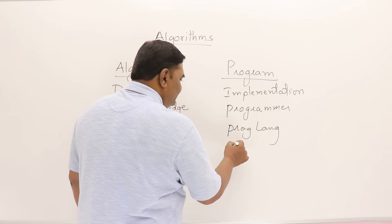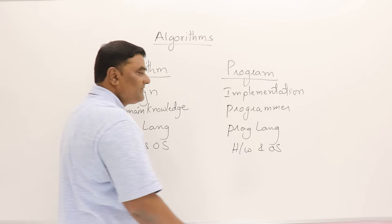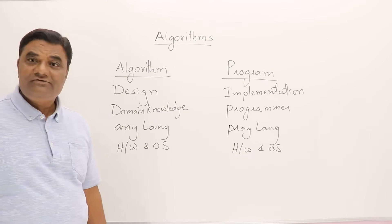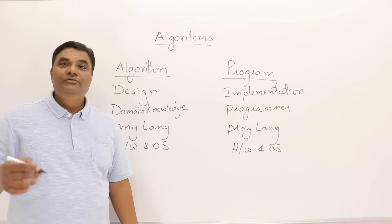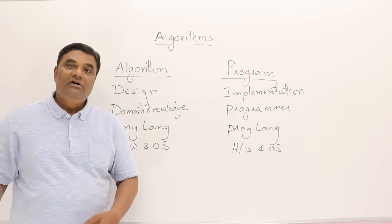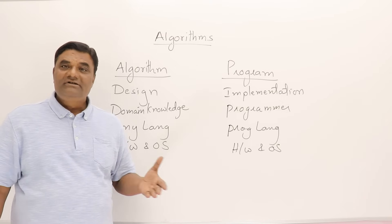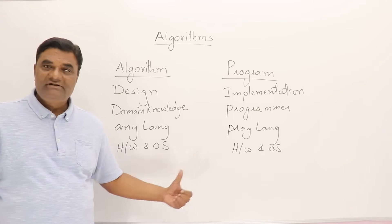But when you write a program, it is dependent on hardware and operating system. So when you develop a program, you have to select some hardware on which you are going to run. And also you have to select some operating system. You may be doing it for Linux or you may be doing it for Windows. So the method will be different and the environments are different. So this is important.